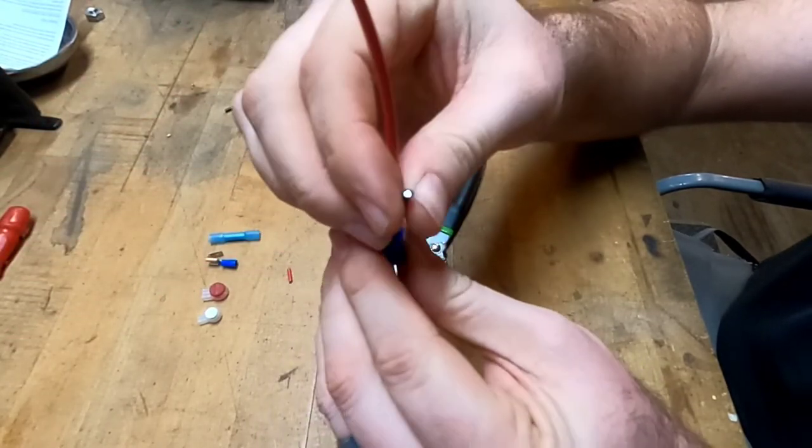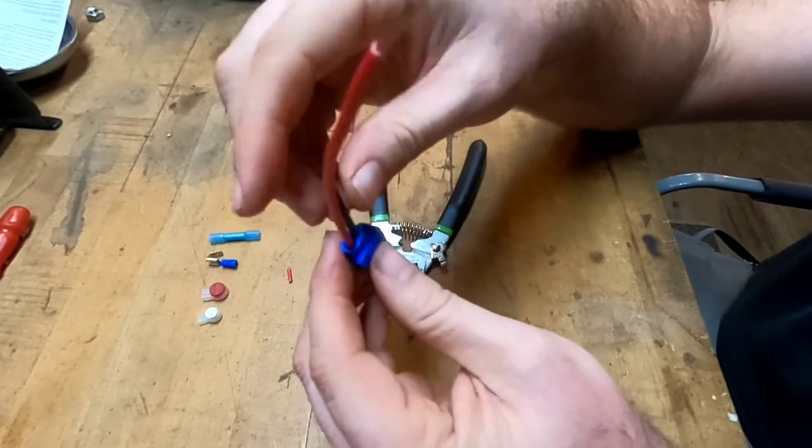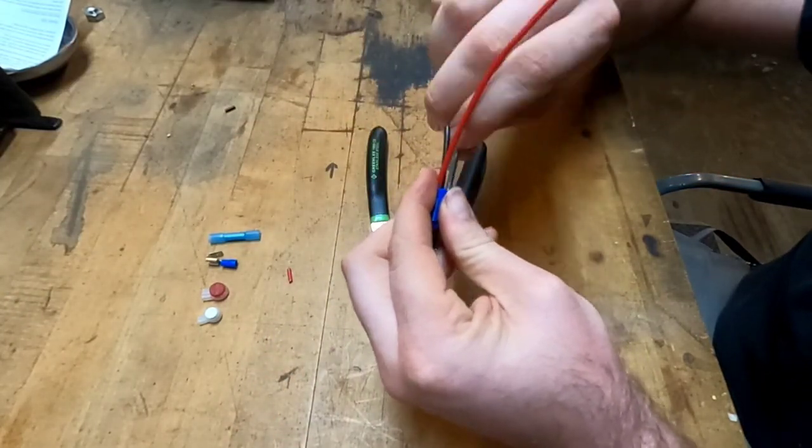Okay. So if we were to test this, it may pass a resistance test. But what I want to do is now take it back apart and I want to show you what the wire looks like that we just spliced together and why this doesn't work.